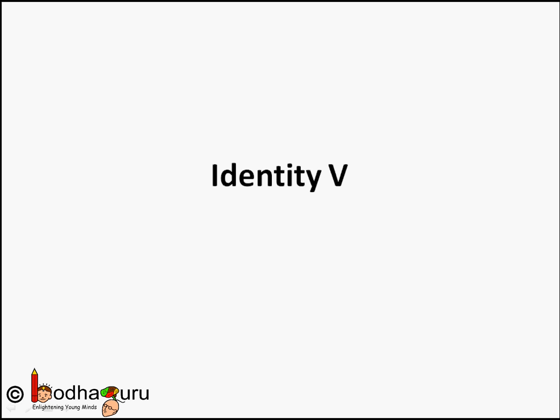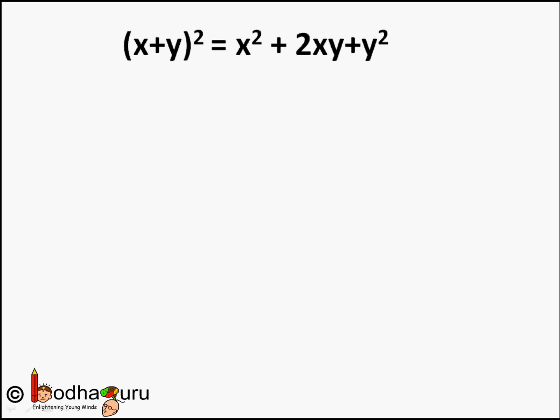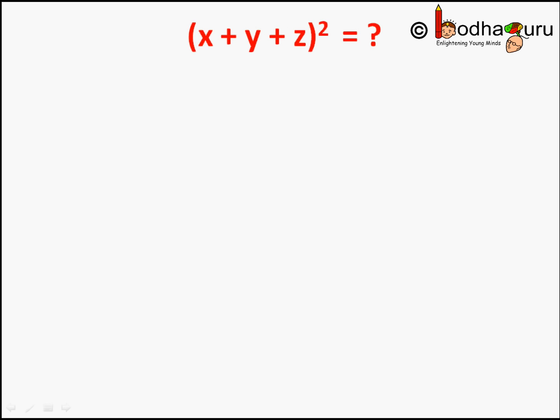Hello friends. From our earlier lessons about algebraic identities, we know the square of the sum of two variables: x plus y whole square is equal to x square plus 2xy plus y square. But what if there are three variables like x plus y plus z whole square? Let us find the value of it.